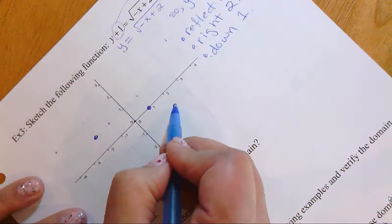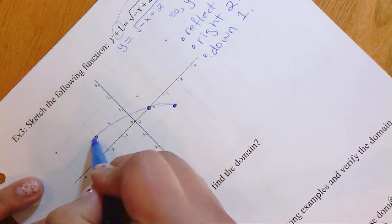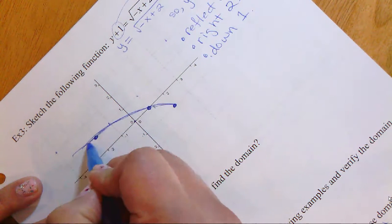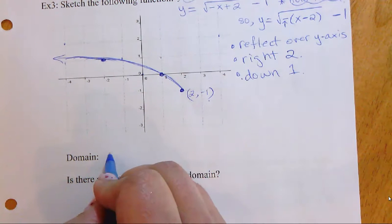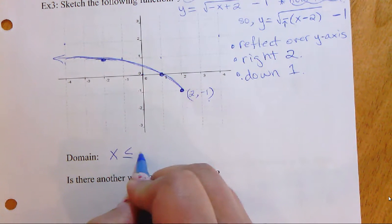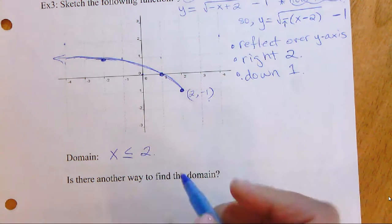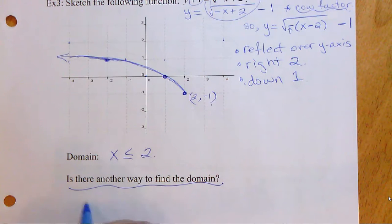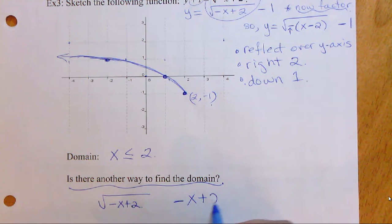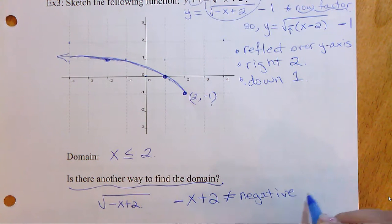Turn your page to make it easier to draw a nice curve, keeping a uniform shape and putting an arrowhead at the end. The endpoint is now at (2, −1). The domain for this function is x less than or equal to 2.